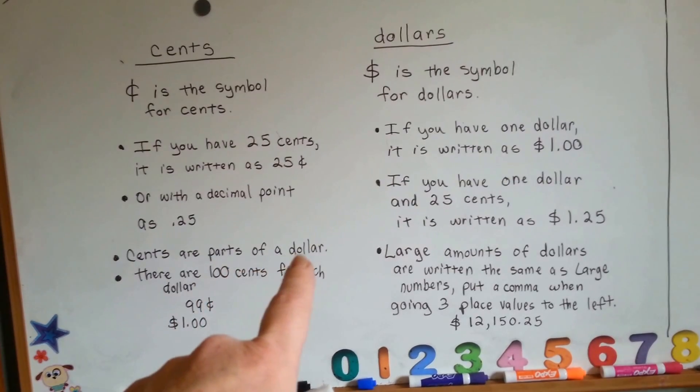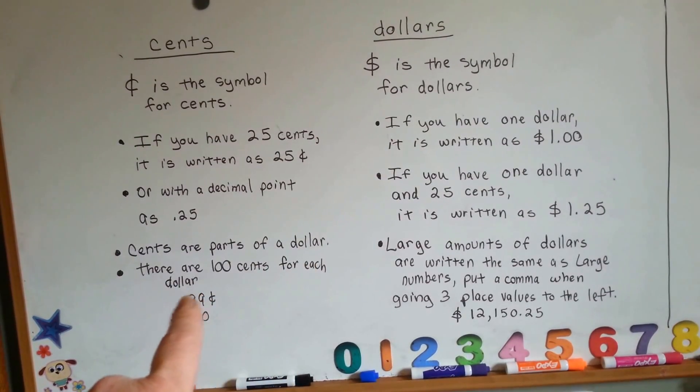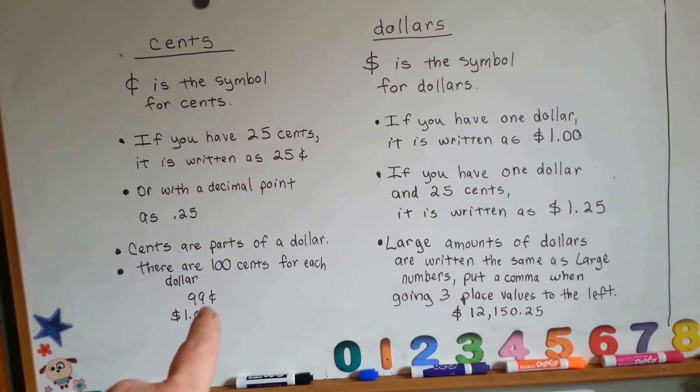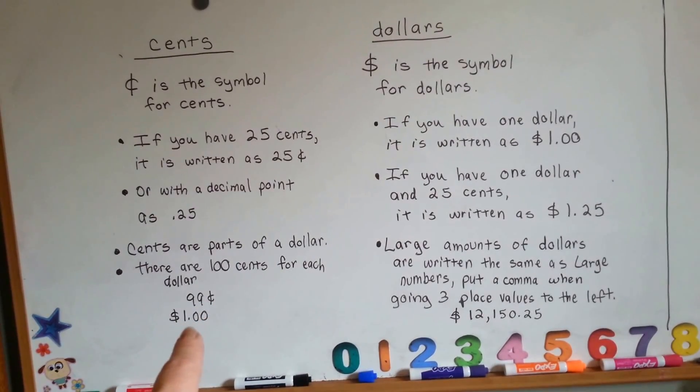Cents are parts of a dollar. There are 100 cents for each dollar. So when you get to 99 cents, the next biggest number is one dollar.